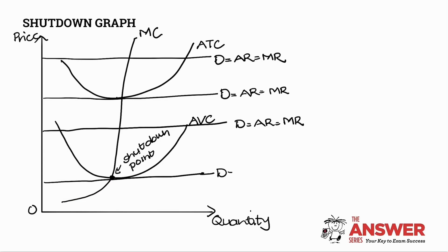That there of course is my shutdown point. Let me just extend that a little bit. D is equal to AR which is equal to MR and at this point the firm will simply not be producing.